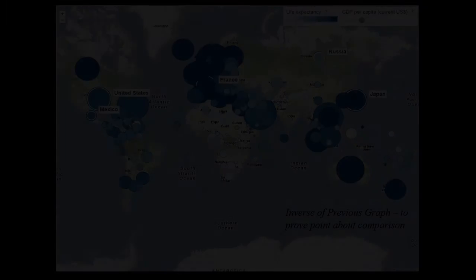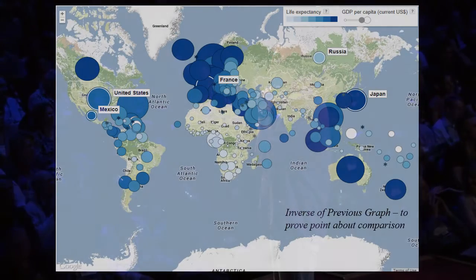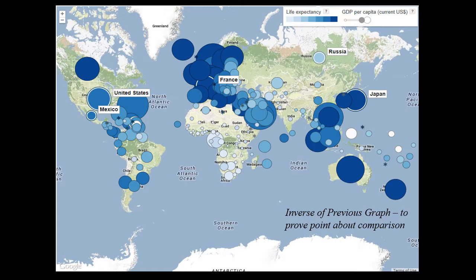Now we need to know if GDP is tied to life expectancy. The graph shows the same colors for GDP, and now we have life expectancy — the bigger the circle, the higher the life expectancy. You can see that the darker blue circles are bigger and the lighter blue circles are smaller. That means my hypothesis might have been correct: a higher GDP per capita equals a higher life expectancy.